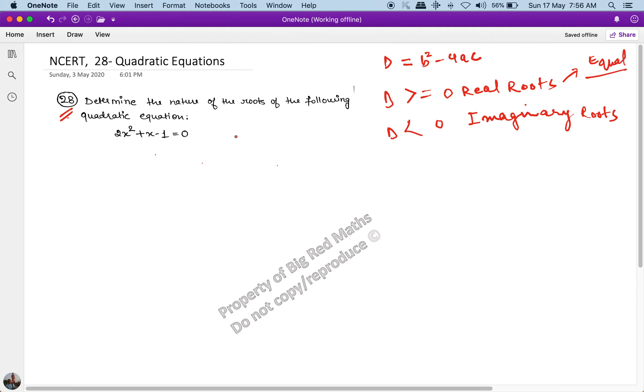Comparing with the standard form, I can determine that the value of a is 2, the value of b is 1, and the value of c is minus 1. So the determinant is b squared minus 4ac.